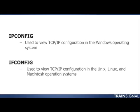The first couple of commands I want to go over are very similar in nature. Not only are they named similarly, but the functionality is pretty much the same. These two commands are ipconfig and ifconfig. Both are used to view TCP/IP configuration. The difference is ipconfig is for the Windows operating system, whereas ifconfig you will find in Unix, Linux, and Macintosh.